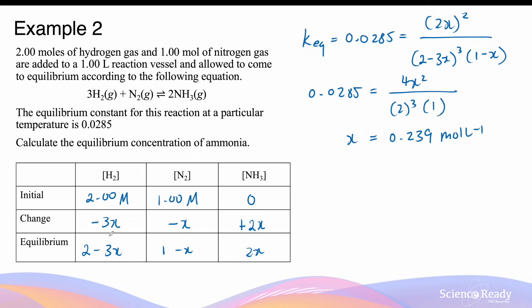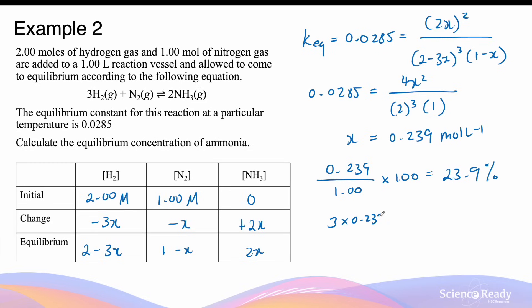Checking the validity: comparing x = 0.239 to the initial concentration of N2 gives 0.239 / 1.00 × 100 = 23.9%. Comparing 3x = 0.717 to the initial concentration of H2 gives 0.717 / 2.00 × 100 = 35.9%. Both far exceed the 5% threshold, so the simplifying assumption is not valid here. The equilibrium constant is not small enough, and the quadratic equation must be used instead.